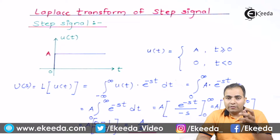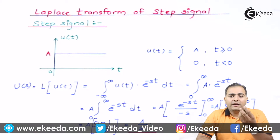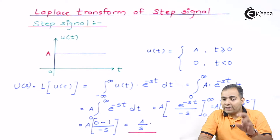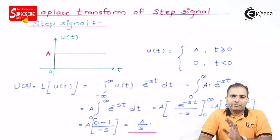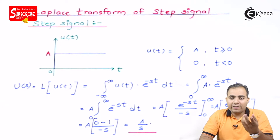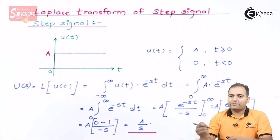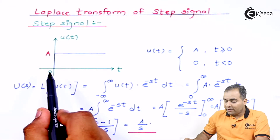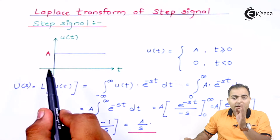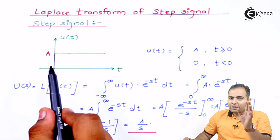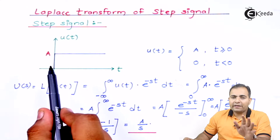I'll explain how this step signal is referred to as a unit step signal. But first, the most important thing is understanding the step signal itself, and then its Laplace transform. So let's go through the function and the graph of the step signal. The step signal is a causal signal, or one-sided signal — meaning this function is available only at t greater than or equal to zero.